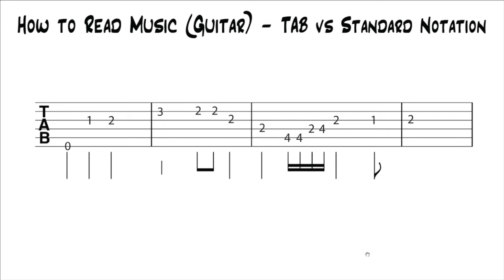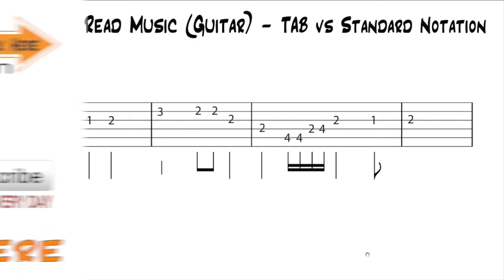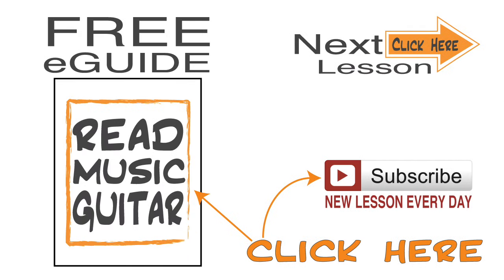If you really want to dive into tab and how to read more of the notation that can be on tab, check out my other lesson, How to Read Guitar Tab. This lesson was really about the difference between tab and standard notation and how you can use them together. Go on to the next lesson where I'm going to talk about rhythm notation, and be sure to download the eGuide — all the diagrams are in there. Subscribe because we have at least one new lesson every day.